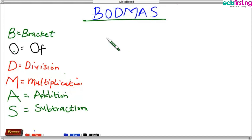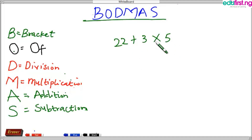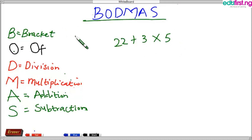BODMAS helps us to know which operation to perform first in a given mathematical problem. For instance, we have 22 plus 3 multiplied by 5. Here we have more than one operator — we have addition and we have multiplication. So how do we solve this to arrive at the correct answer? We have to apply BODMAS.